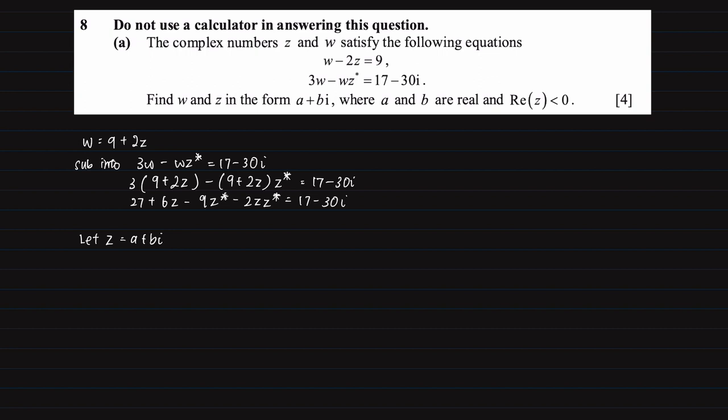So moving on we will have 27 + 6(a + bi) - 9(a - bi) - 2(a + bi)(a - bi) equals 17 minus 30i.